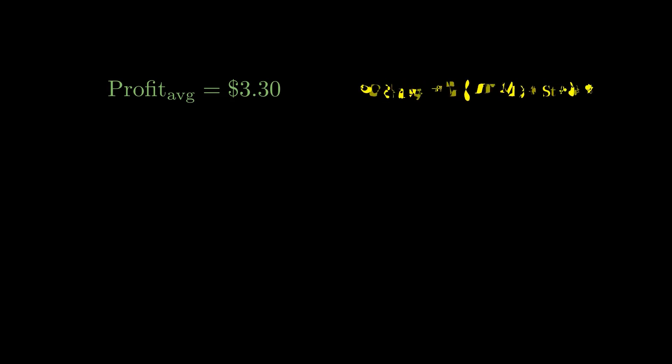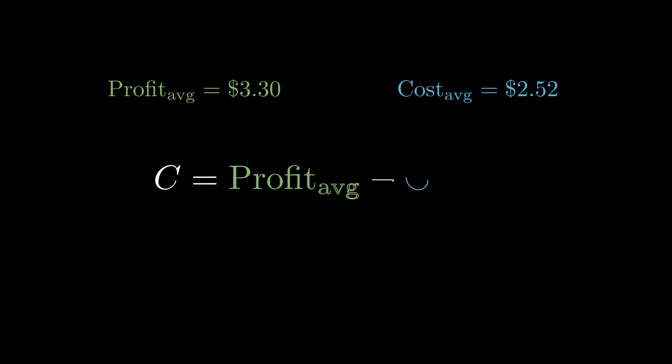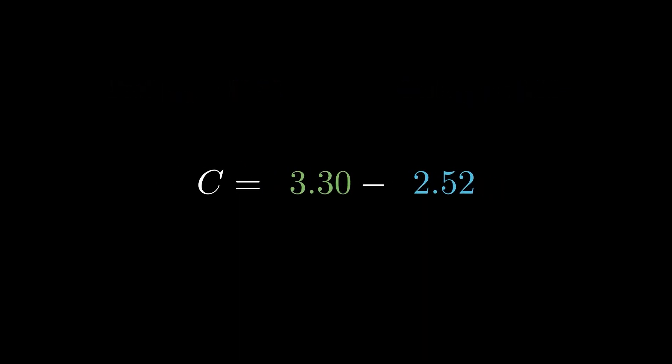As we can see, the average value of all stock above the strike price — or more simply, the average amount we'll earn for holding this option to expiration — is $3.30. We can also see that the strike price multiplied by the likelihood of finishing in the money — or more simply, the average amount we expect to pay if we hold the option to expiration — is $2.52.